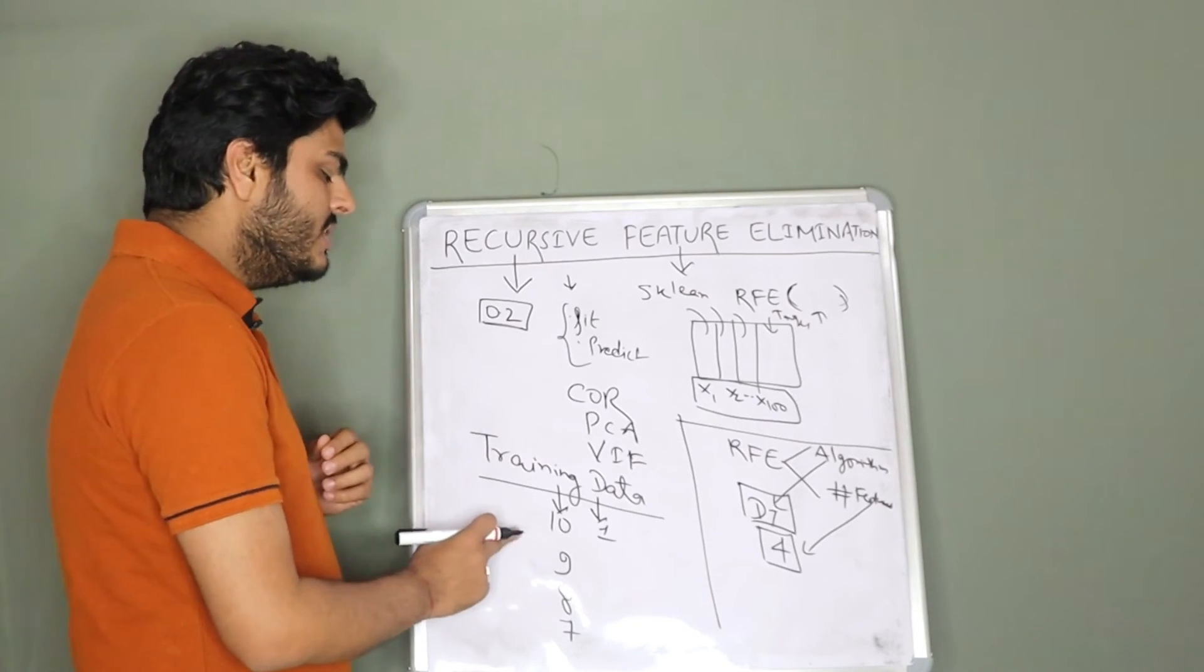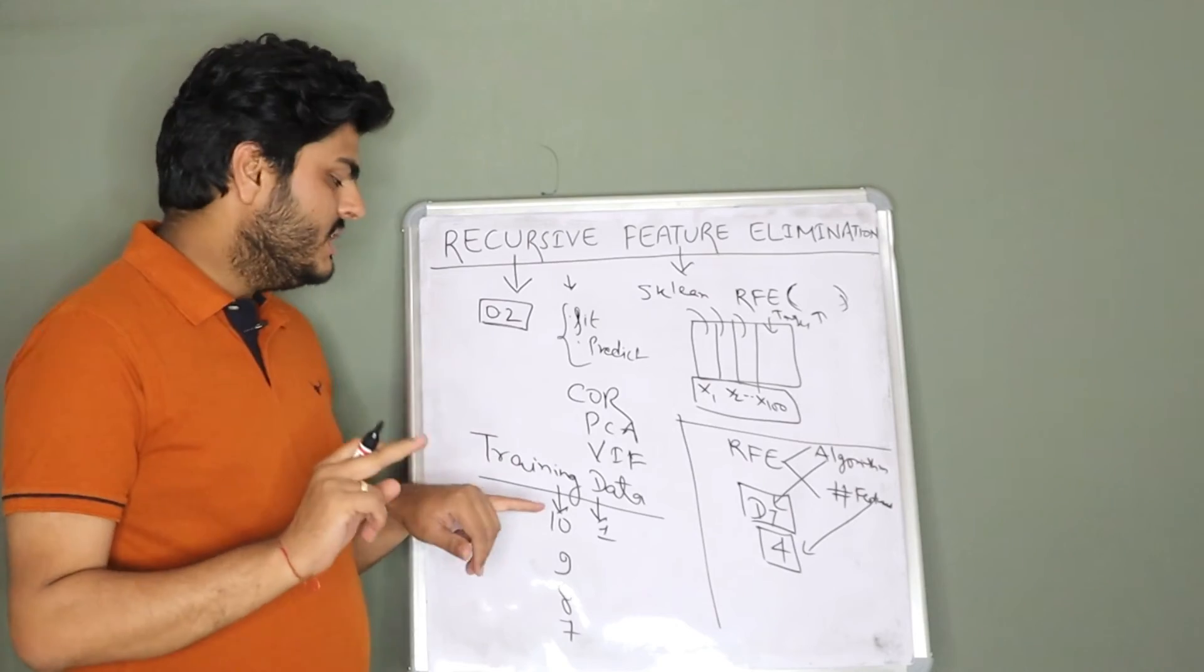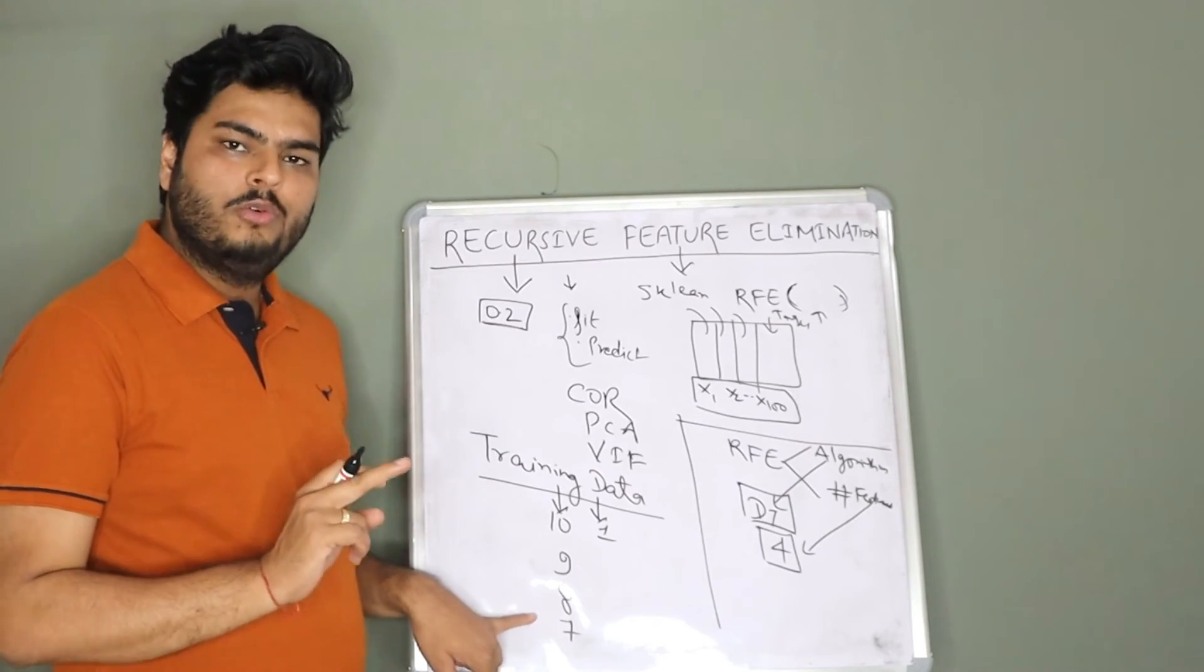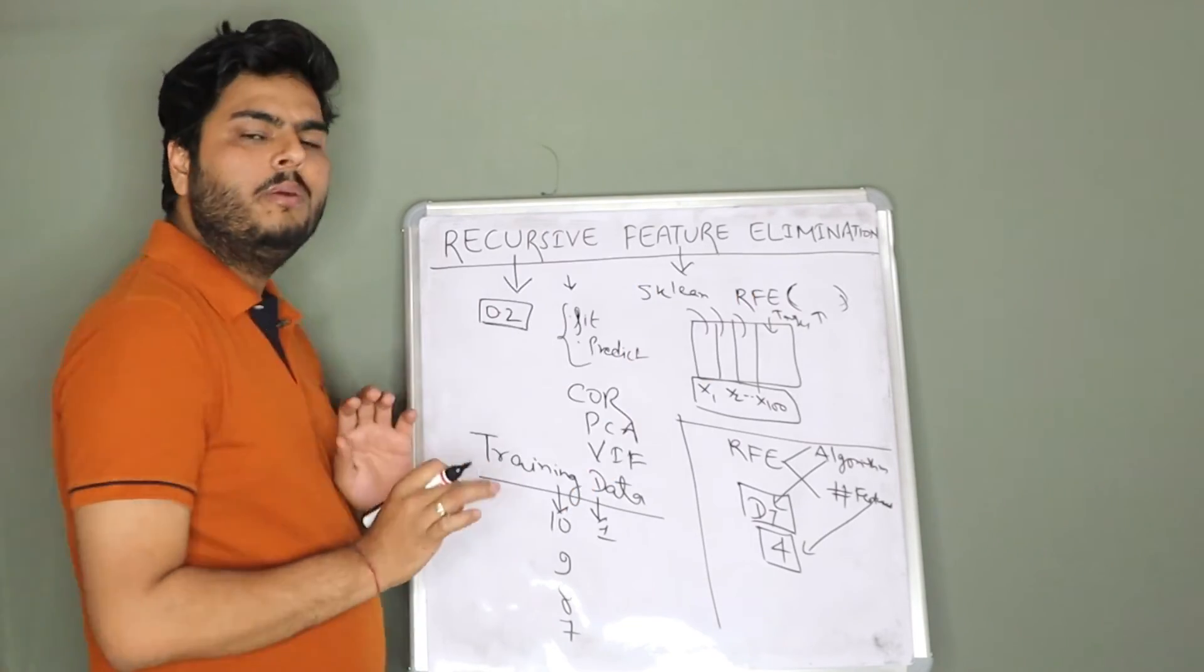How many will be removed after first iteration? What is 20 percent of 10? 2. So, in next iteration only 8 variables will go. This is just one parameter that you can set in RFE sklearn.